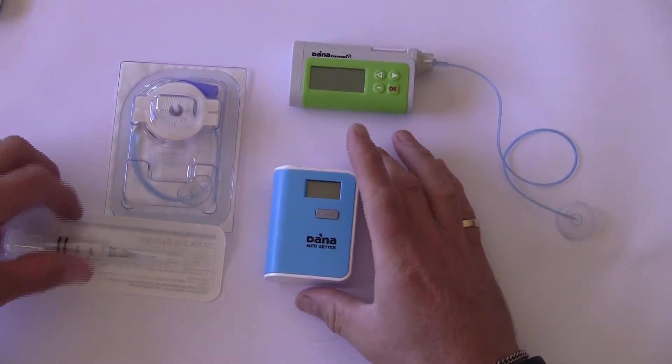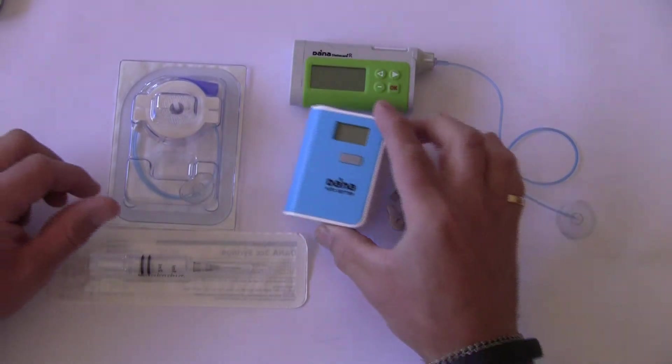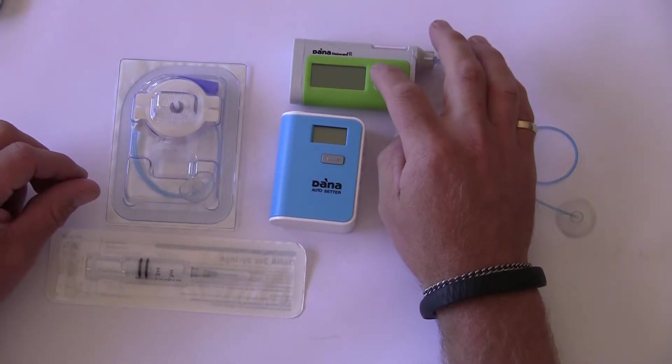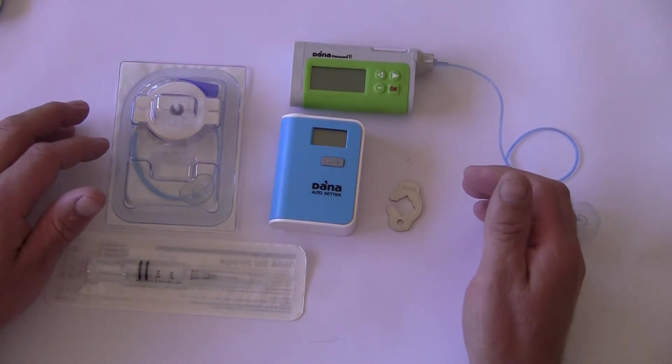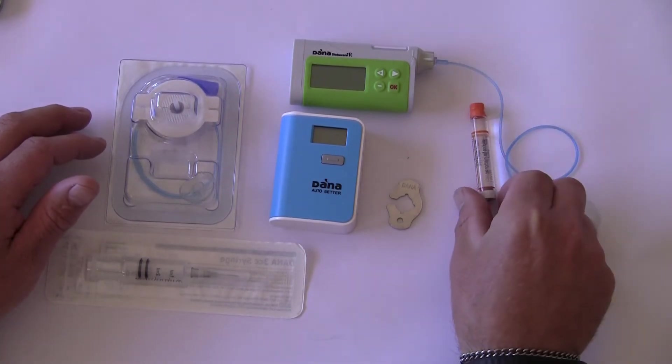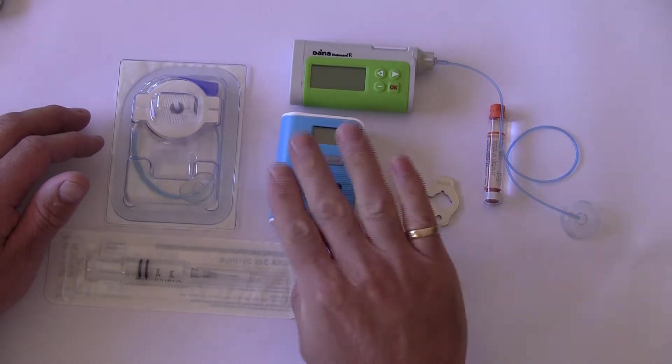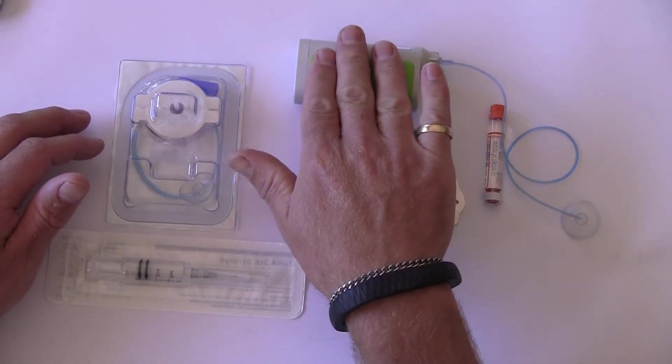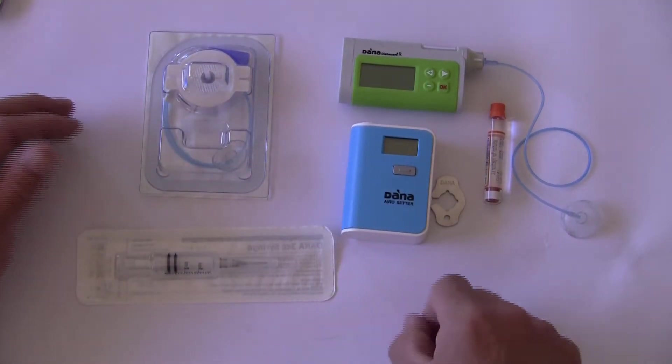Okay, today we are going to demonstrate the use of the new Dana Auto Setter to refill and reload a Dana Android insulin pump. Now before we get started we have to make sure we've got everything ready. So we have some room temperature insulin that's ready to go, we have a Dana key, we have the Dana Auto Setter, we have the pump that's running with a current basal rate, we have an infusion set and we have a new reservoir ready to go into the device.